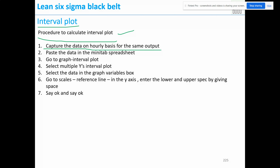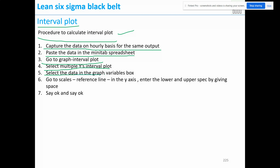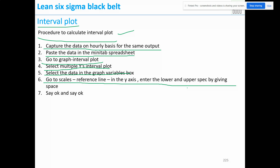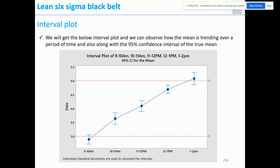Procedure: collect data on an hourly basis for the same output, paste the data in the Minitab spreadsheet, go to Graph > Interval Plot, select multiple Y's interval plot, select the data in the graph variable box, go to Scales > Reference Line on the Y-axis, enter the lower and upper spec limits with a space between them, and click OK.